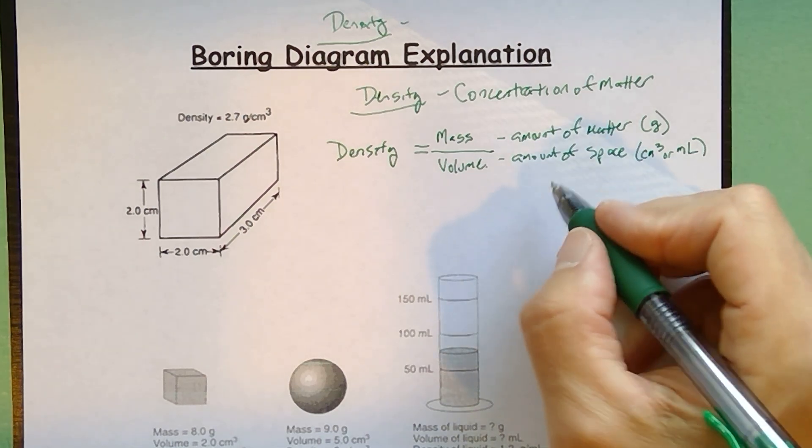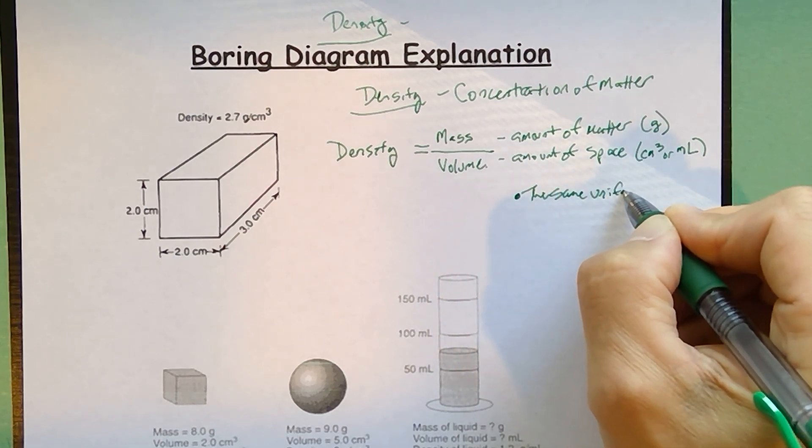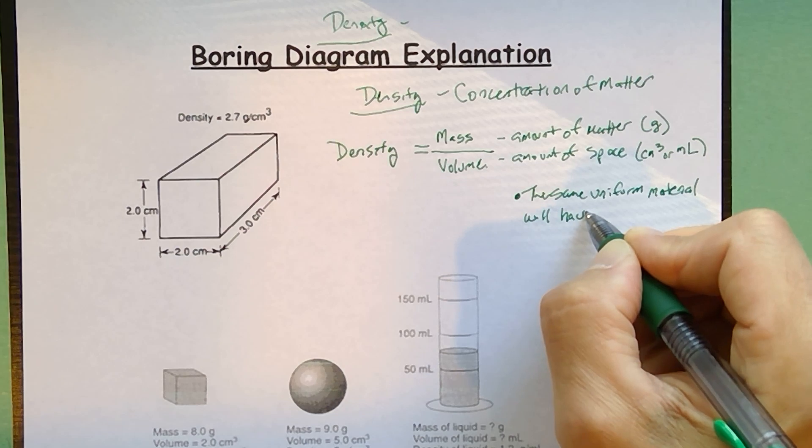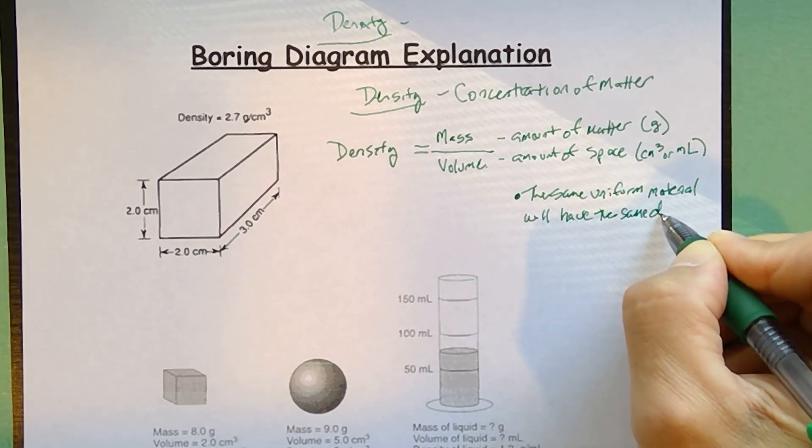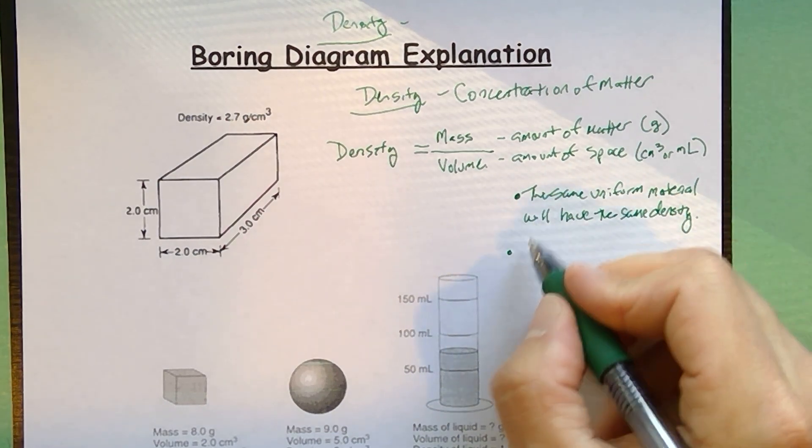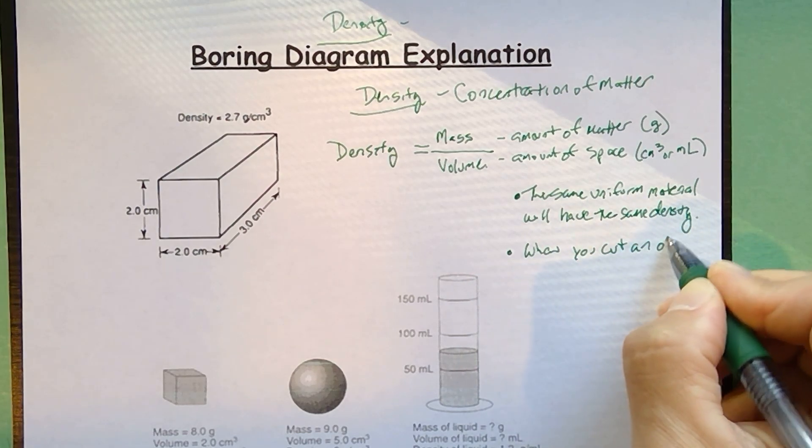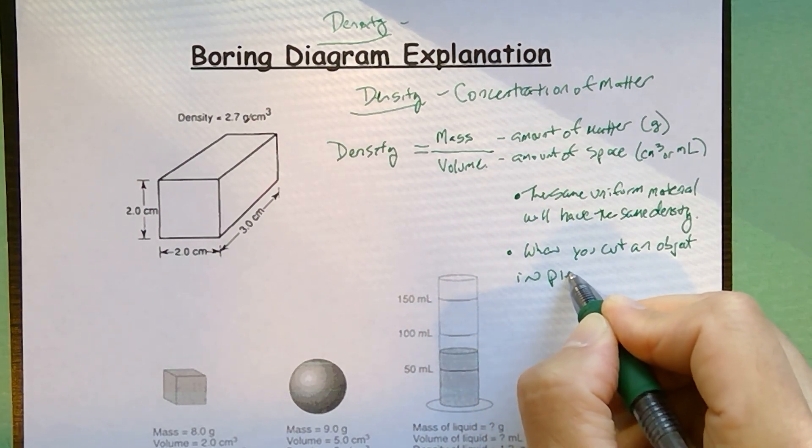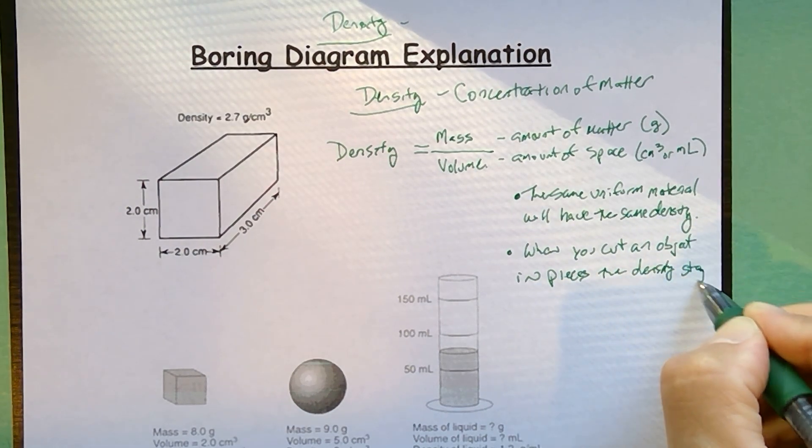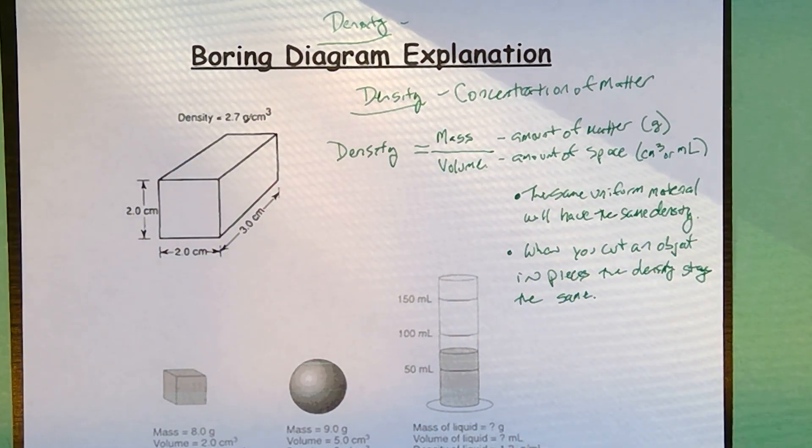One thing you should definitely know is if you have the same uniform material, and they like that word uniform, the same uniform material will have the same density. Another thing that you definitely should know that they ask about is when you cut an object in pieces, the density stays the same. If you cut an object, you're not forcing the molecules closer together or farther apart.